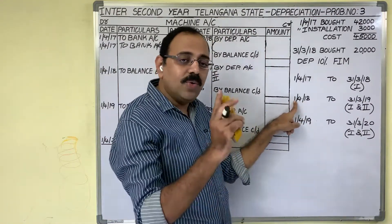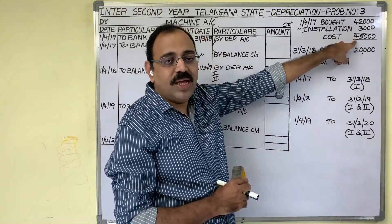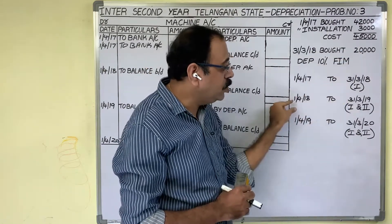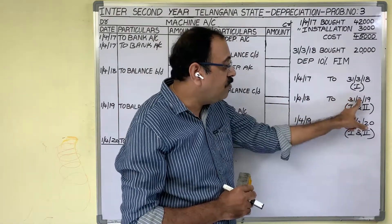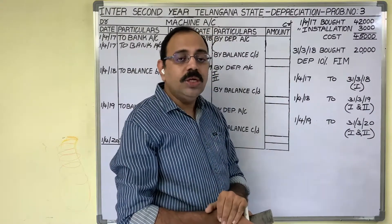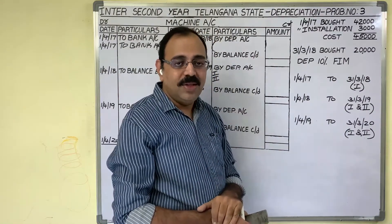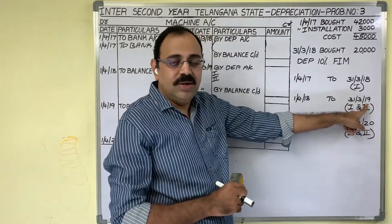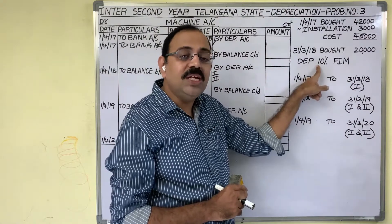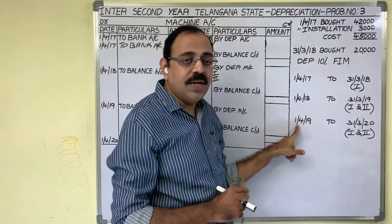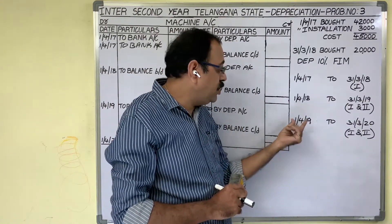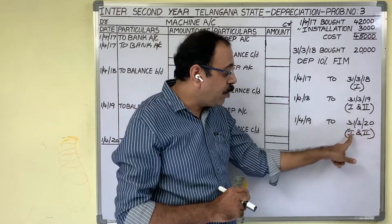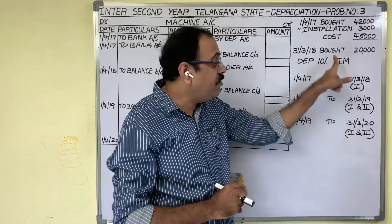So on 1st April 2018 we have two assets: the first asset worth 45,000 rupees and the second asset worth 20,000 rupees. Both assets are used from 1st April 2018 to 31st March 2019 — 12 months in the second year. Therefore, at the end of the second year we provide depreciation on both assets. In the third year, the two assets are used from 1st April 2019 to 31st March 2020, and on 31st March 2020 we provide depreciation on both assets at 10% per annum.